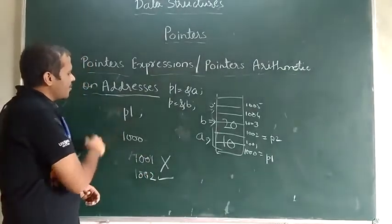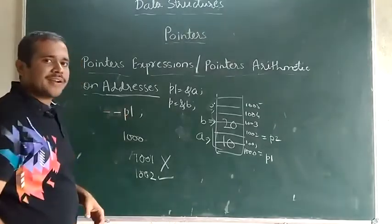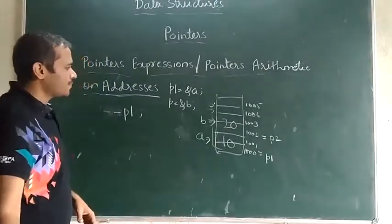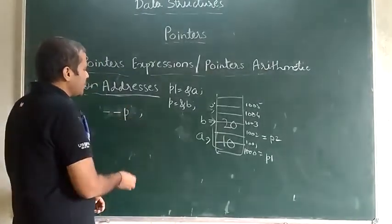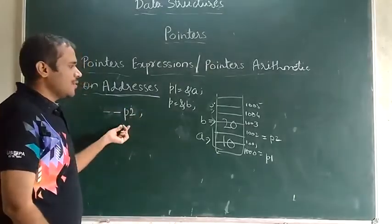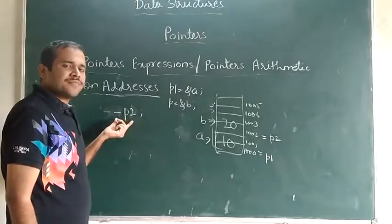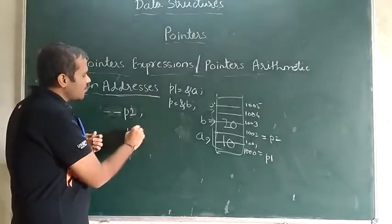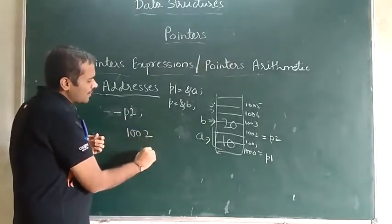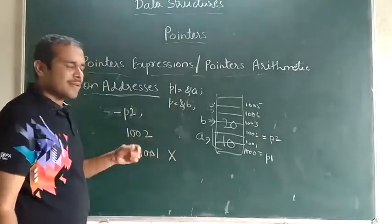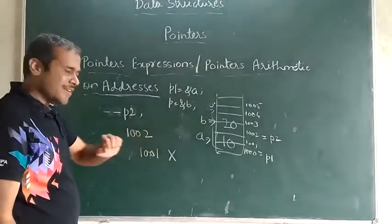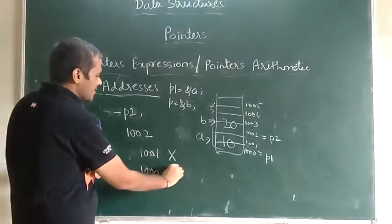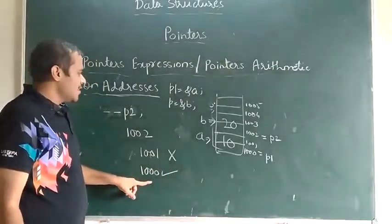Now let me do decrement on p2. If p2 is 1002, you might think the output is 1001, but that is also wrong. The output will be 1000, because integer takes 2 bytes of memory. Decrement reduces by the scale factor of 2 bytes.